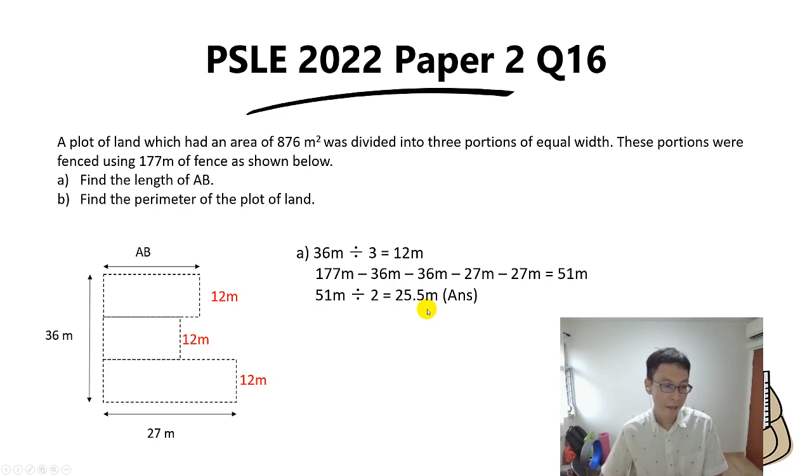Now for part B, we want to find the perimeter of the plot of land. As you can recall, perimeter is basically the length of the surrounding borders outside. It doesn't include the length inside the area.